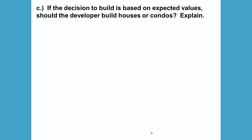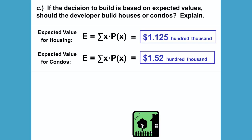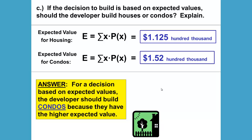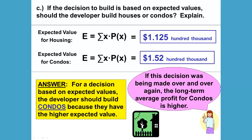Part C: if the decision to build is based on expected values, should the developer build houses or condos? Our expected value for housing is 1.125 hundred thousand and the expected value for condos is 1.52 hundred thousand. The expected value for condos is higher, so for a decision based on expected values the developer should build condos because they have the higher expected value. If this decision were made over and over again, the long-term average profit on condos is higher.